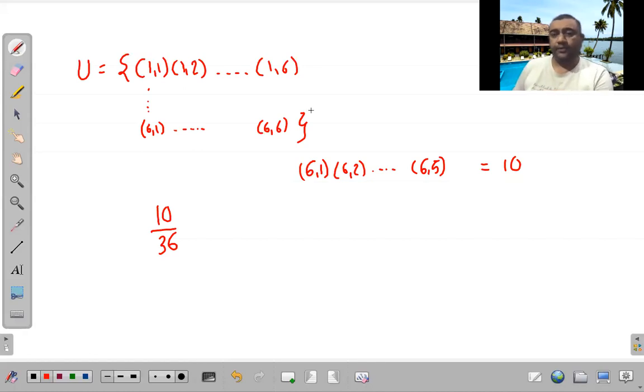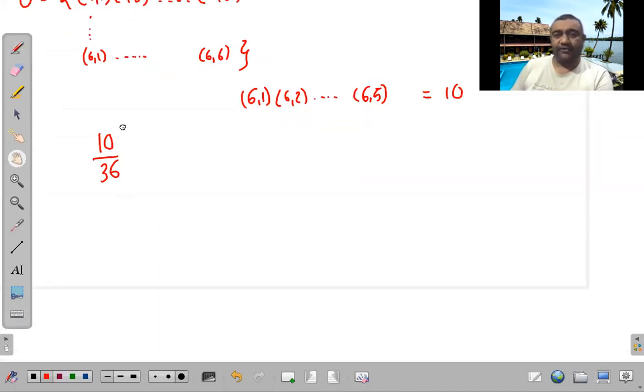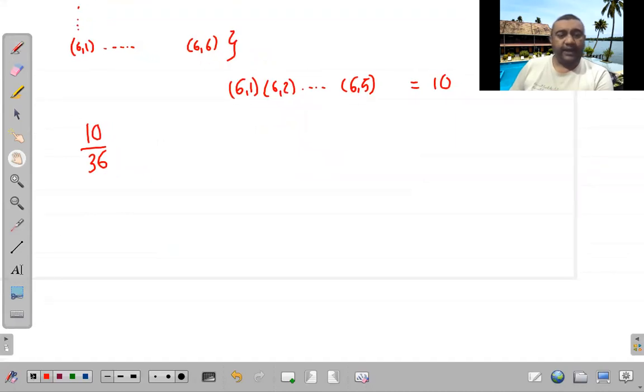I am throwing two dice. What is the probability of success? That is coming six? One by six. So what happened?